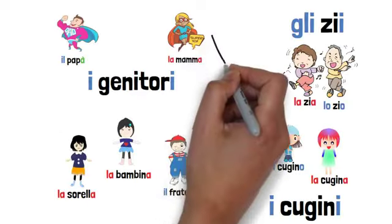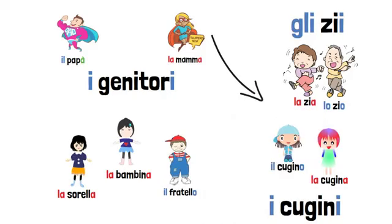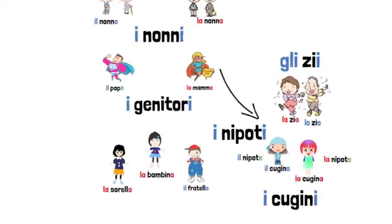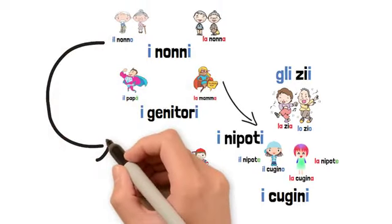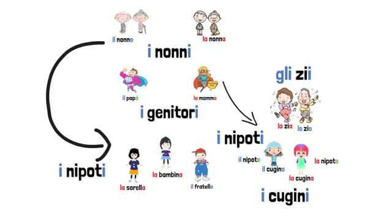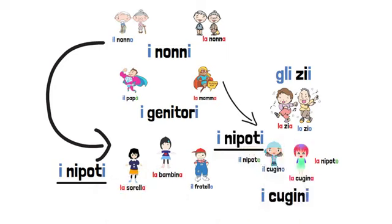For her mom, il cugino e la cugina are nephews, i nipoti — la nipote, il nipote. And here are the grandchildren. In Italian we use the same word for both grandchildren and nephews, i nipoti.